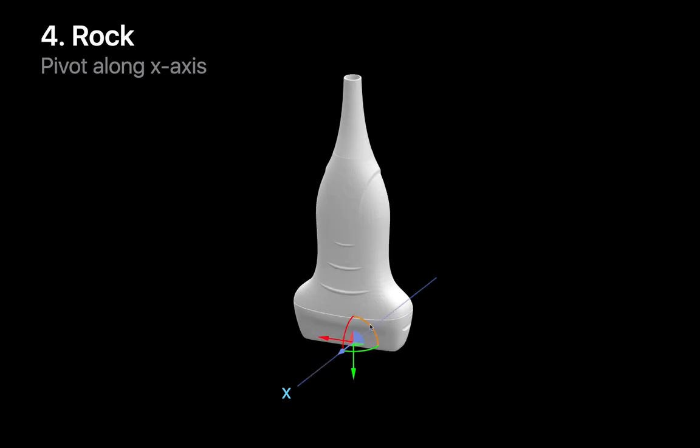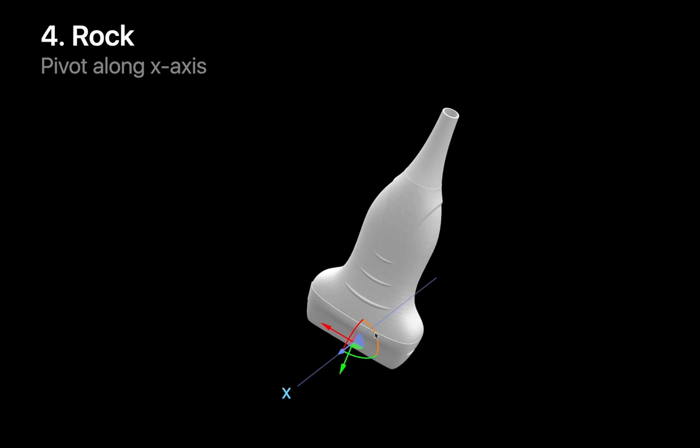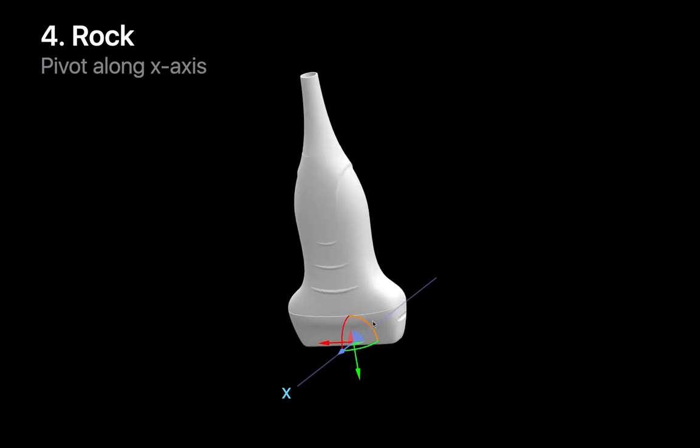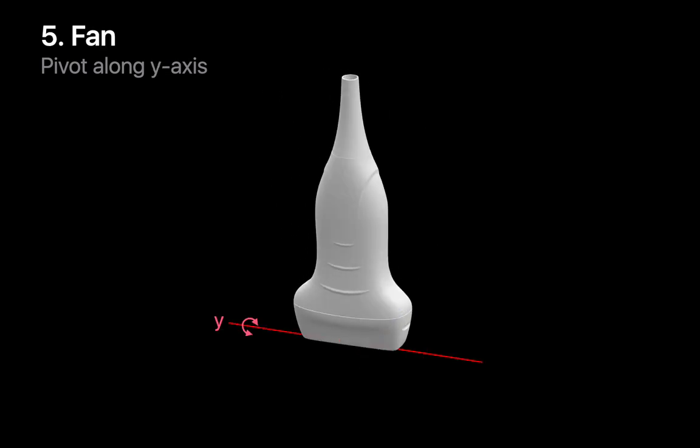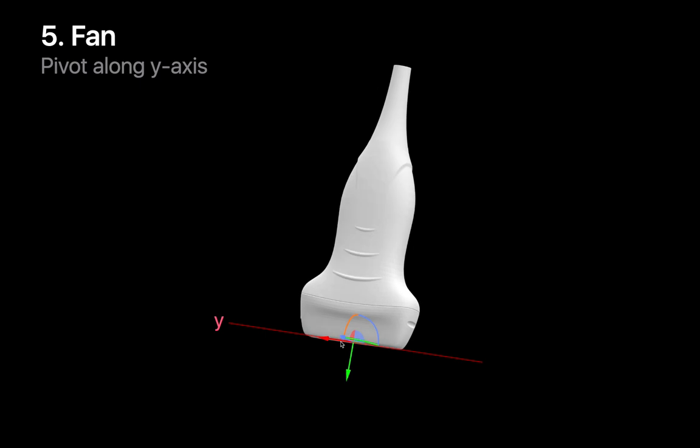Pivoting in the long axis of the probe about a fixed point is called rocking. Pivoting in the short axis of the probe about a fixed point is called fanning.